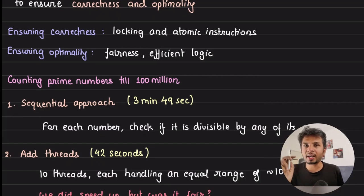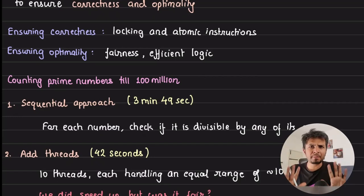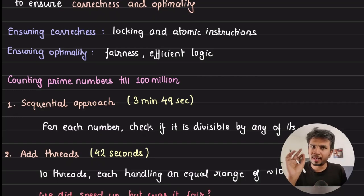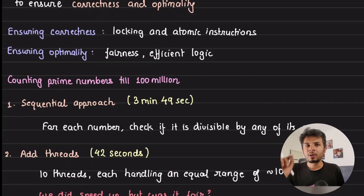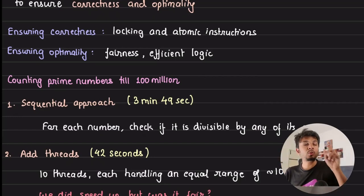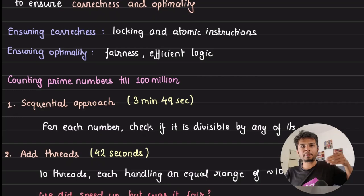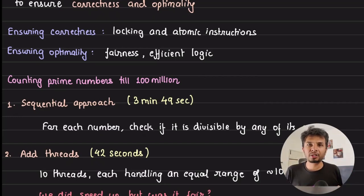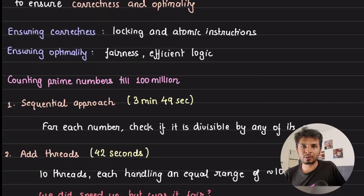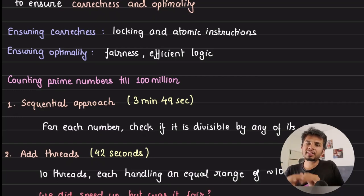To ensure optimality, we have to ensure fairness. We'll take an example of counting prime numbers from 1 to 100 million — we'll just count them, not print all of them. We'll see how three approaches shape the execution and how it becomes better each time.